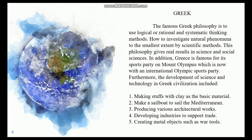The next civilization is the Greeks. The famous Greek philosophy uses logical, rational, and systematic thinking methods to investigate natural phenomena to the smallest extent by scientific methods. This philosophy gives real results in science and social sciences. In addition, Greece is famous for its sports party on Mount Olympus, which is now the international Olympic sports event.